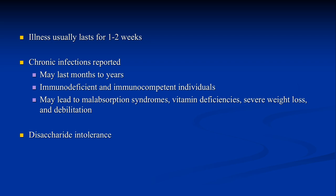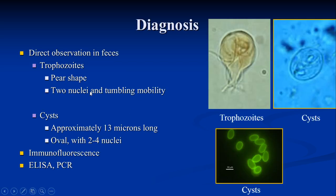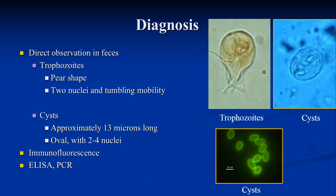Diagnosis: the sample of choice is a stool sample. We can do direct microscopy by saline wet mount or iodine wet mount, where we can see the presence of trophozoites — pear-shaped with two nuclei and flagella, as shown in the diagram — and cysts. Other than microscopy, we can do immunofluorescence staining of the stool sample to detect oval glowing cysts. From blood, we can perform ELISA for detection of antibodies. From stool, we can also isolate DNA and perform PCR for diagnosis.